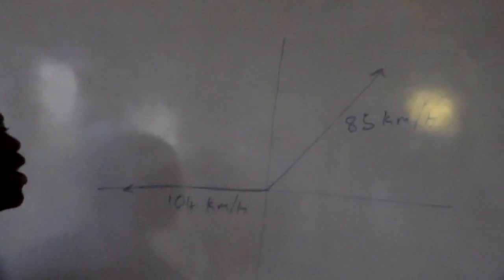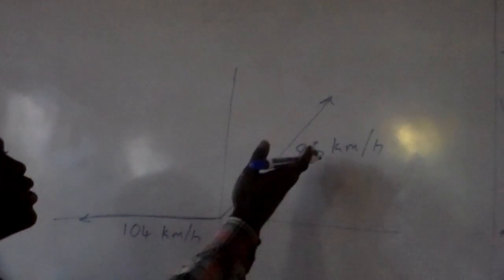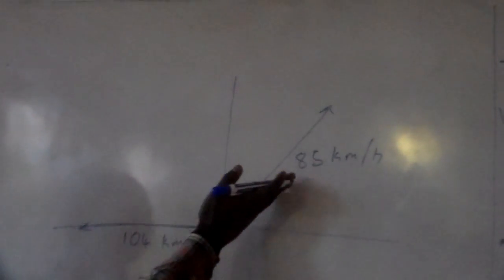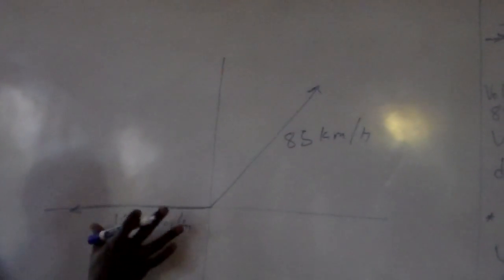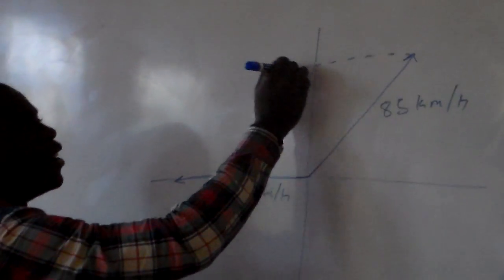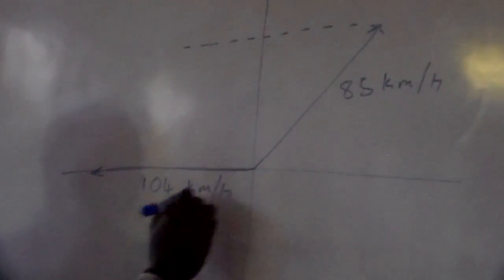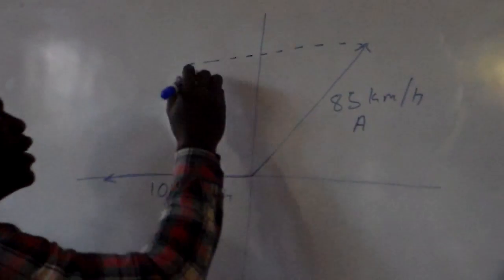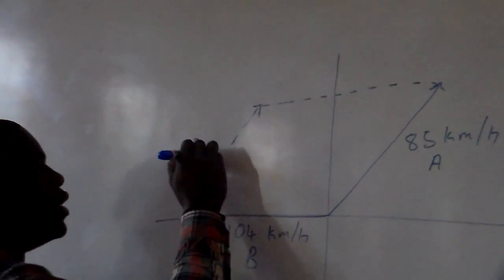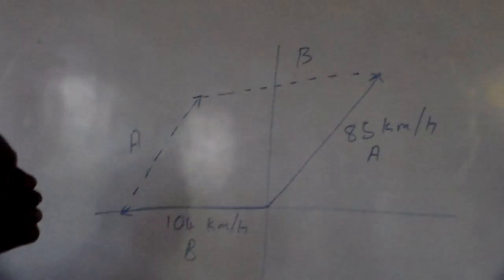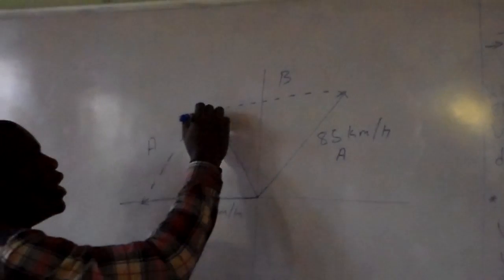Recall from Newton's second law that we used the parallelogram method to resolve the resultant velocity from two components. In this case, we label one line as B and another as A. Then we have a second line parallel to A, and another parallel to B. The relative velocity is the diagonal line between these two lines.